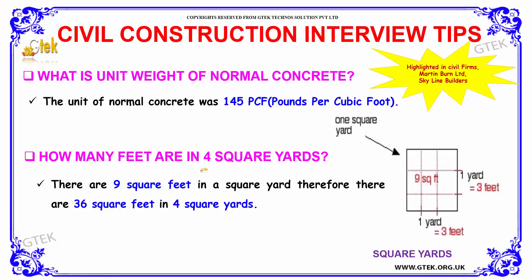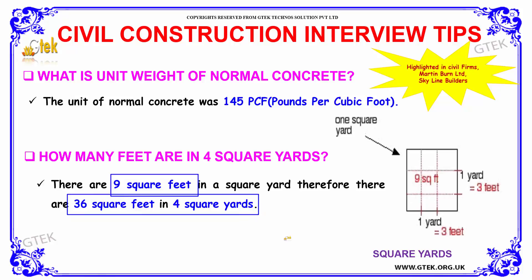How many square feet are there in 4 square yards? There are 9 square feet in a square yard, therefore there are 36 square feet in 4 square yards.